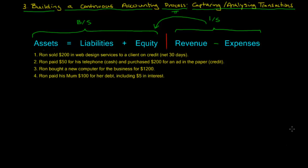Here are the four transactions that Ron incurred during January. Ron sold $200 in web design services to a client on credit, net 30 days, meaning the client owes Ron back in 30 days. Ron also paid $50 for his telephone bill in cash, and purchased $200 for an ad in the local paper on credit. Ron also bought a new computer for the business and paid $1,200 cash. And he paid his mother back $100 for her debt, which included $5 in interest.